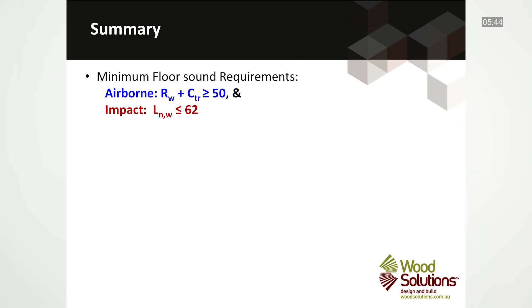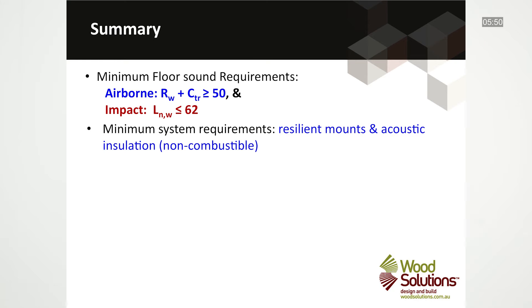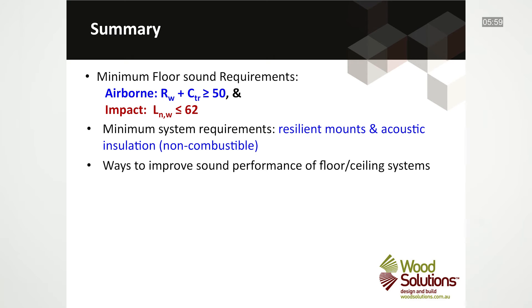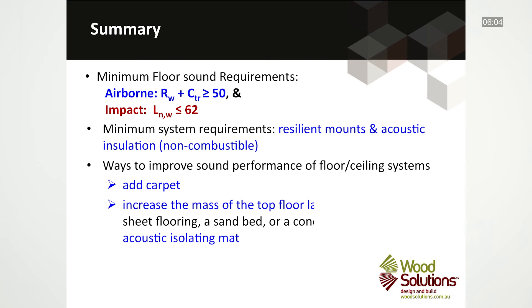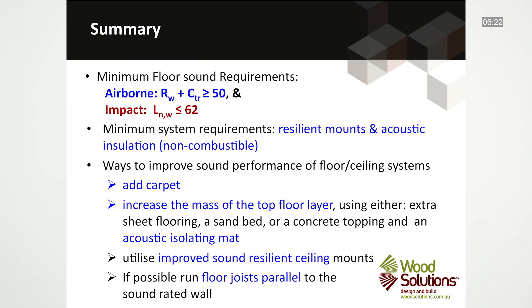So in summary, the minimum NCC requirements for floor ceiling systems are an airborne performance greater than 50 and an impact performance less than 62. The minimum system requirements with a bare timber floor are resilient mounts and at least R2 acoustic non-combustible insulation. Ways to improve the sound performance include using carpet to reduce impact noise, increasing the mass of the top floor layer using either extra sheet flooring, a sand bed, or a concrete topping — with an acoustic isolating mat to separate the additional mass from the structure — utilizing improved sound resilient ceiling mounts, or if possible, running floor joists parallel to the sound rated wall.